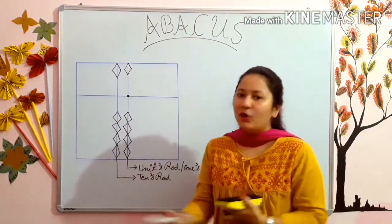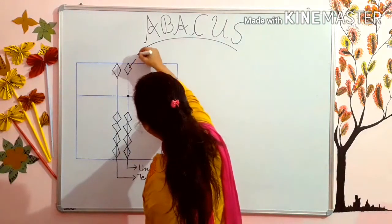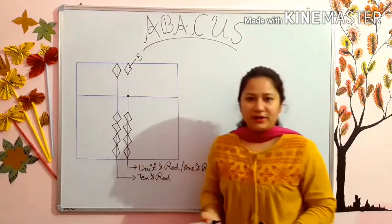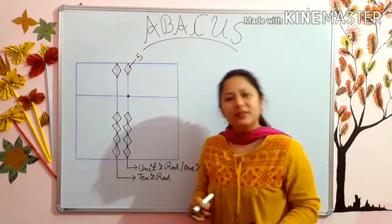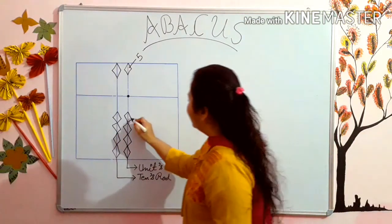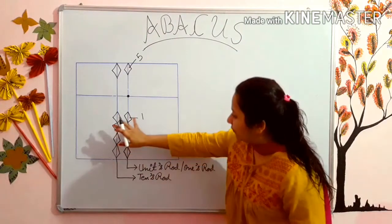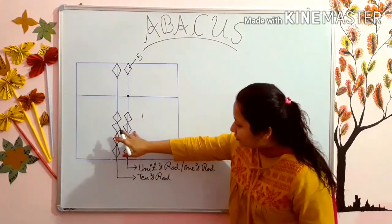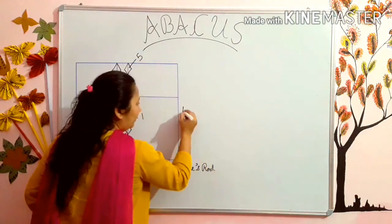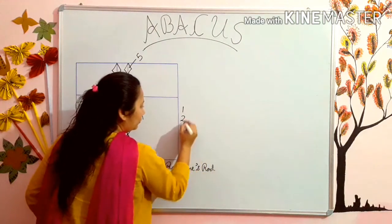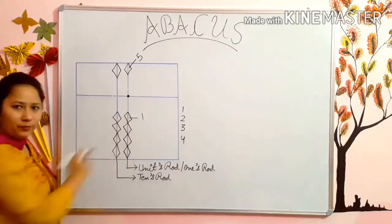Now, the labeling of the beads. As you know, this bead is 5. In your first step, you have also learned this. This is bead 1, and 1, 2, 3, 4 — the lower beads of the units rod.